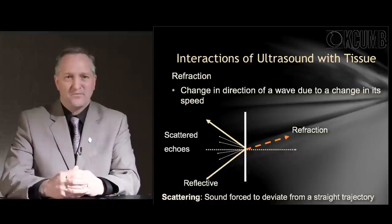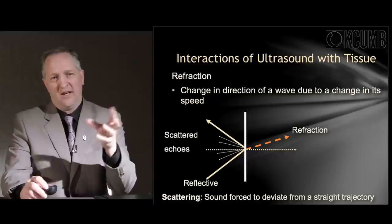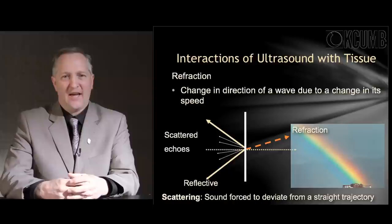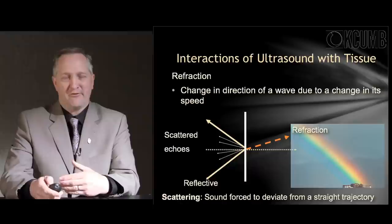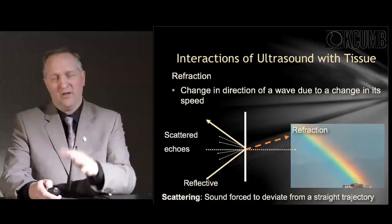Refraction and scattering involve a change in the direction of the wave due to its speed. The wave hits a flat structure and gets diffused into different angles, sometimes scattered in multiple directions. Just as light passing through water crystals in the air creates a rainbow, refraction and scattering of sound waves redistribute them away from the ultrasound head, impacting the ability of the transducer to interpret what it receives back from the structure being imaged.